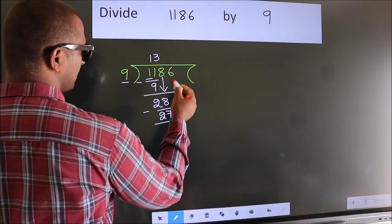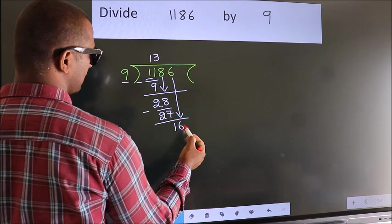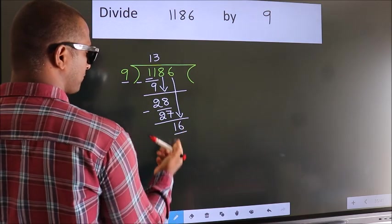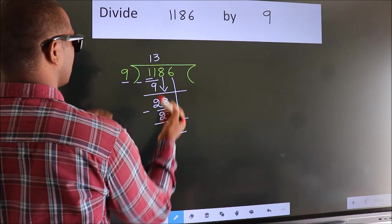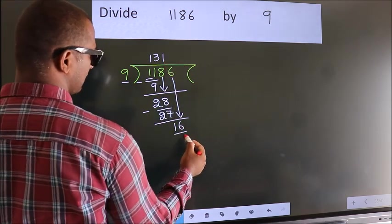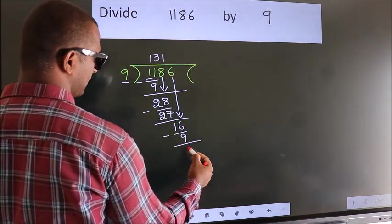After this, bring down the beside number. So 6 down. So 16. A number close to 16 in 9 table is 9 once 9. Now we subtract. We get 7.